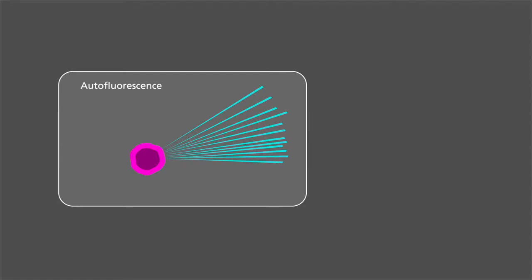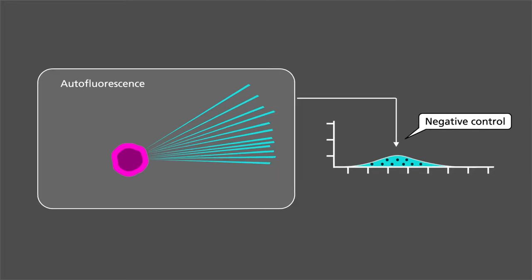Autofluorescence is a natural characteristic in all cells. They fluoresce without markers and define the negative control. But too much autofluorescence can mask the signal of cells with weak markers, as both auto and marker fluorescence are in the same range. Thus, a well-resolved positive and negative population is required.